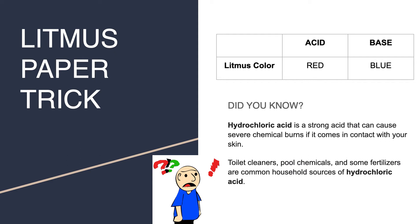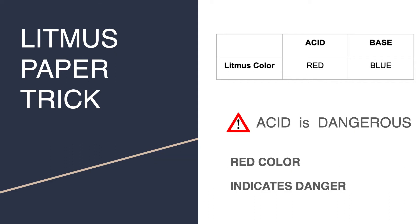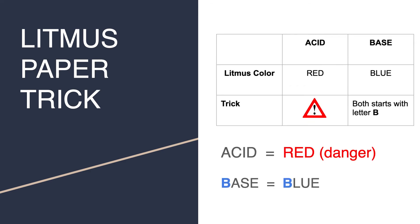Now let's see how we can use this information to create a learning trick. Some acids are dangerous and the color red also indicates danger. Hence we can say that litmus paper turns red for acids because acids are dangerous, and we can associate the color red with danger.